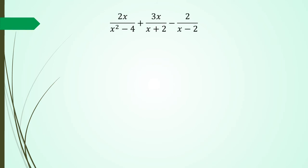So let's have a look at one more example — the last one — when you have a question that looks like this. Remember I talked about cross multiplying: in this case you can try it, but you're going to end up with a really nasty equation. So first have a look: we've got x squared minus 4, x plus 2, and x minus 2. Alarm bells should start ringing — there's got to be a pattern here. Because x squared minus 4 can be written as (x plus 2)(x minus 2).